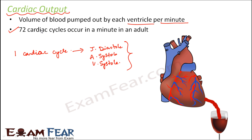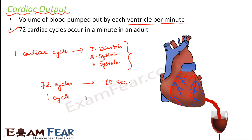Knowing how many cardiac cycles take place in one minute, we can estimate how much volume of blood is pumped out by the ventricle per minute. Since 72 cardiac cycles happen in one minute, which is 60 seconds, one cardiac cycle takes 60 divided by 72, which equals 0.8 seconds. That means one sequence of joint diastole, auricular systole, and ventricular systole takes 0.8 seconds.